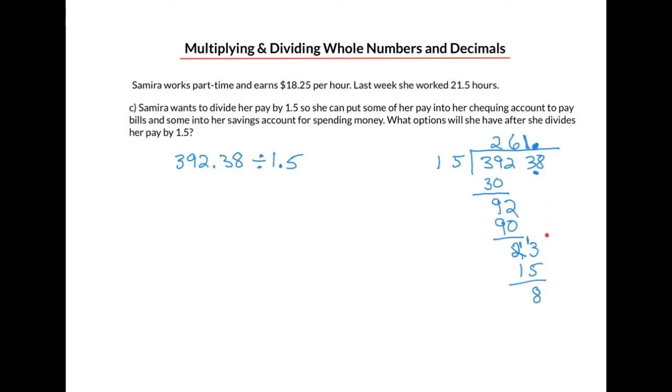And we continue. We'll bring down the 8. And then we'll ask ourselves, how many times does 15 go into 88. And it goes in there 5 times. 15 times 5 is 75. And we subtract, and we end up with a remainder of 13.